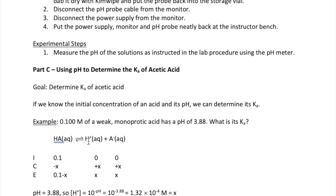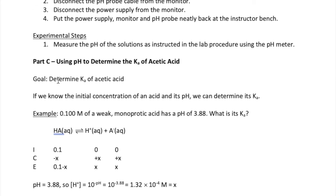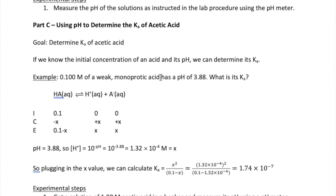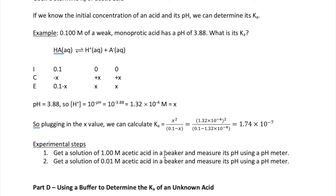Alright, now we're going to talk about part C of the lab. Here, you will calculate the Ka of acetic acid, which is a monoprotic acid, by using its pH and initial concentration. Experimentally, this is actually easy to do. You just get two solutions of acetic acid from the reagent bottles. You then measure the pH of each of these solutions and then record those in your lab procedure.